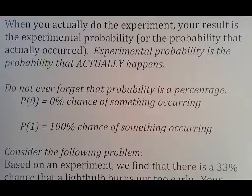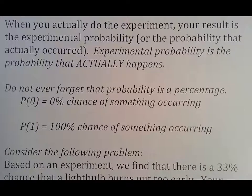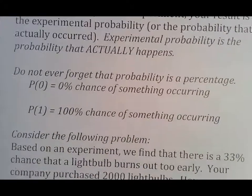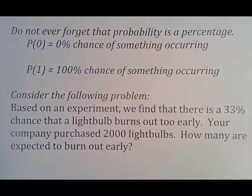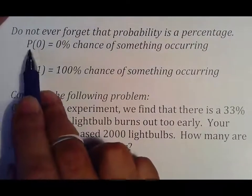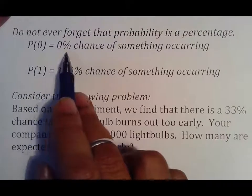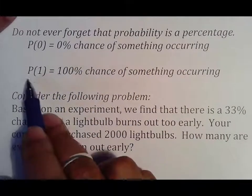So experimental probability is probability that actually happens. Theoretical probability, you don't need an experiment. You just say, well, there's three different things, the chance of me picking one is one of three. Experimental probability means I actually ran an experiment with it, and this was my probability of picking the first one based off of the experiment, which isn't always one in three. It could be something different.